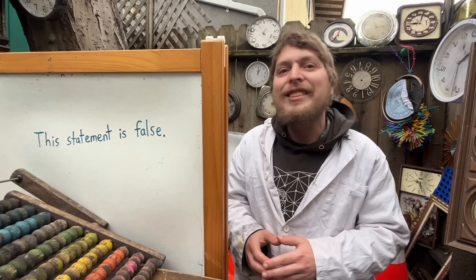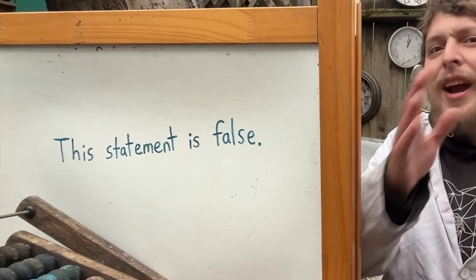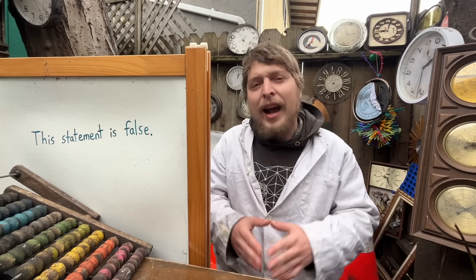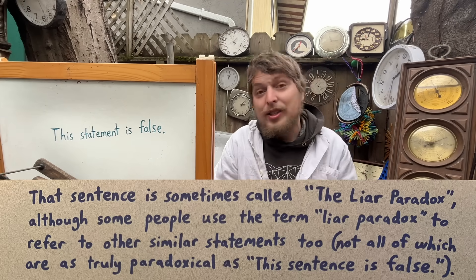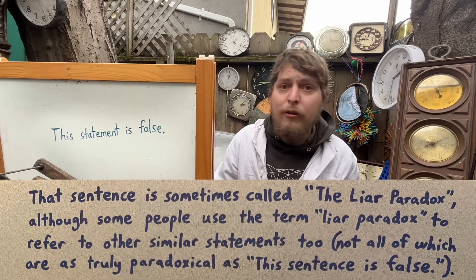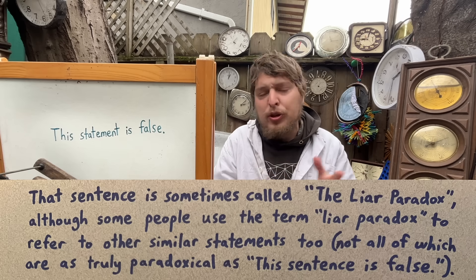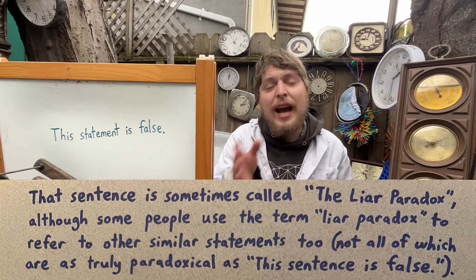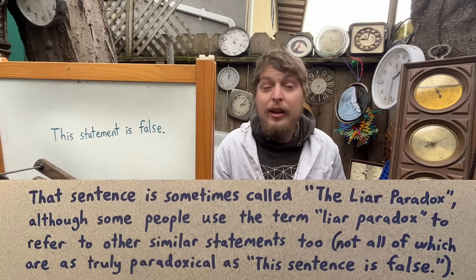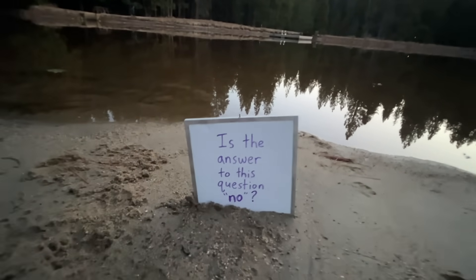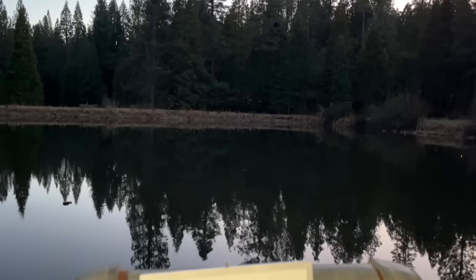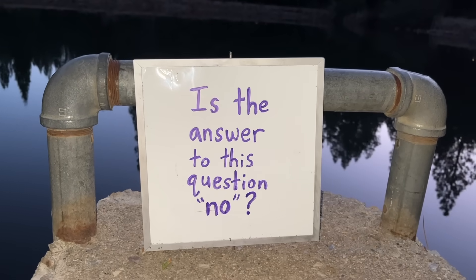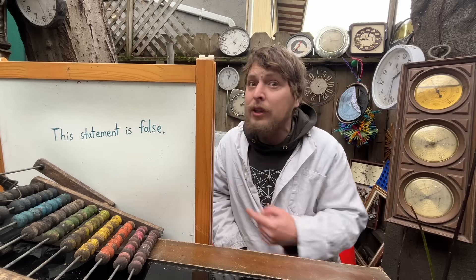Today I wanted to dive into this weird sentence, its paradoxical friends, and some mathematical attempts to fix them. This is known as the liar paradox, and we could also phrase this sort of paradox as questions that are impossible to accurately answer yes or no to — like the question: is the answer to this question no? You can't answer yes or no to that without being wrong in either circumstance, and that's sort of like a question version of the liar paradox.